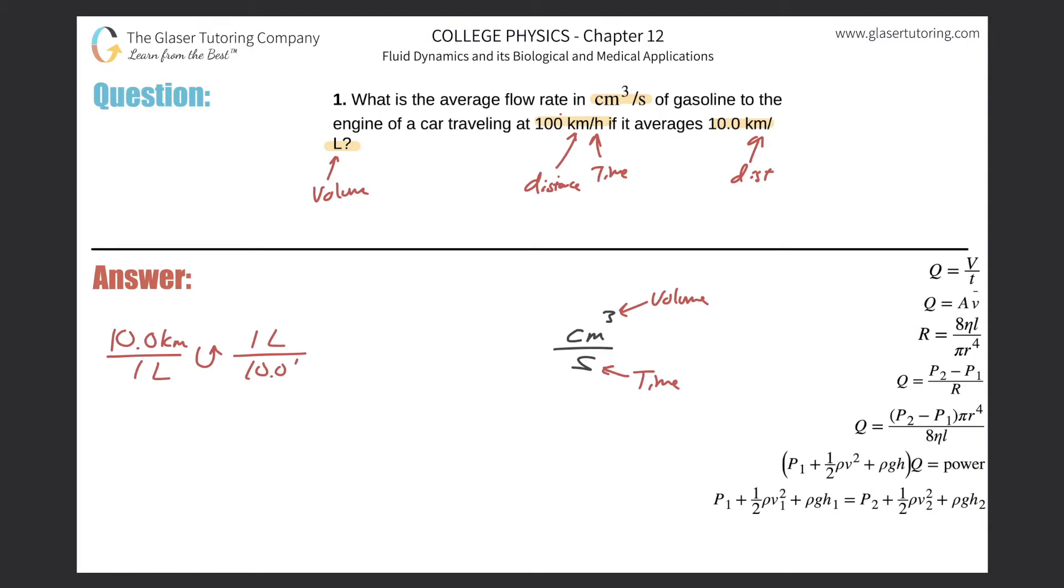Now I know this will be centimeter cubed; I'm not worried about that right now. I just want to get the volume in the numerator. Now what I need is time in the denominator, and that's going to come from the other value. They told us it was going to be 100 kilometers per one hour. I need the time value in the denominator, and it's already in the denominator here, so this is great. I'm just going to slide this on over here.